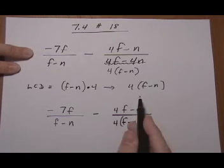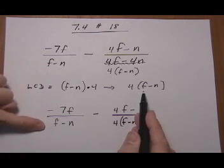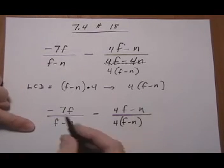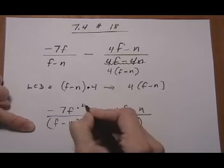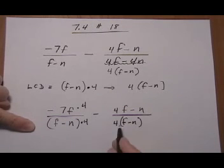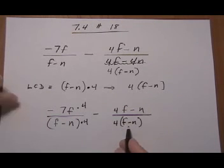And then we look at the LCD and we want to create an LCD here of four times F minus N. So that means we need to multiply by four and we have to do the same to the top. The second one already has the LCD so we don't do anything to it.